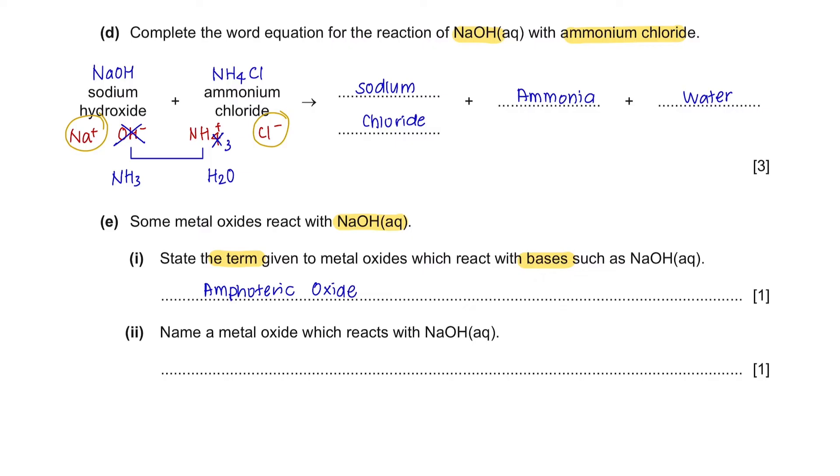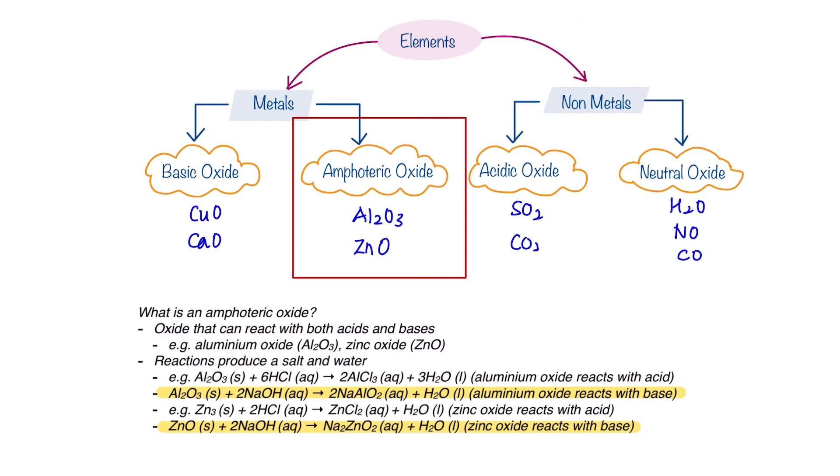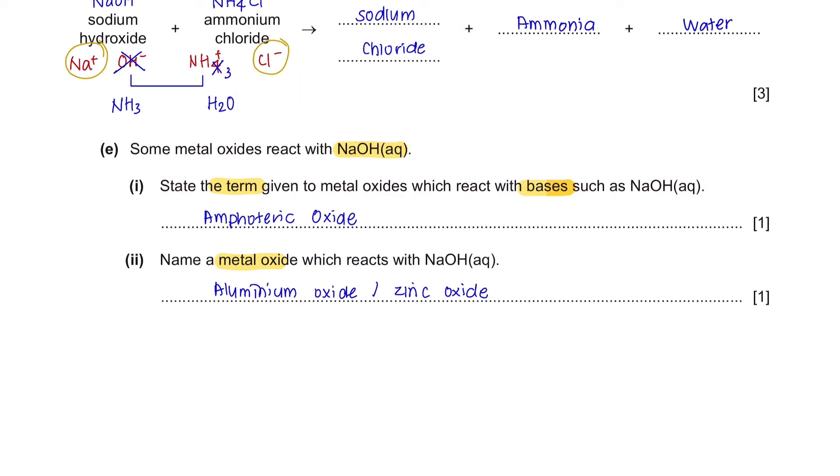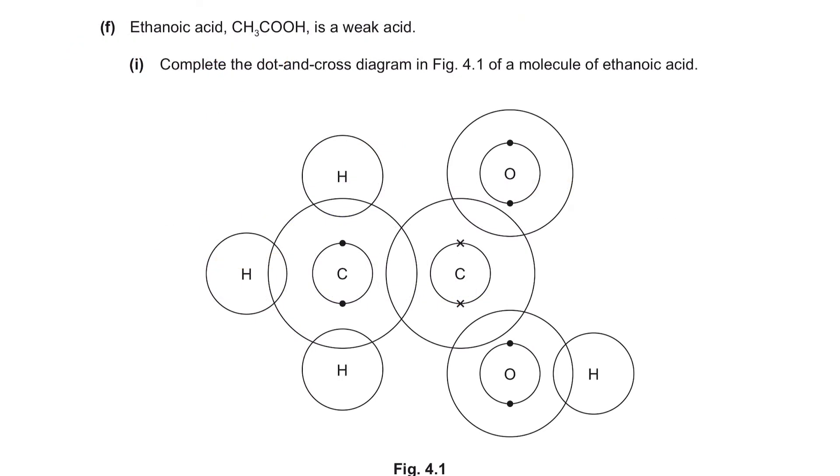Part 2: Name a metal oxide which reacts with sodium hydroxide. There are two common examples for amphoteric oxide which is aluminum oxide and zinc oxide. So you can say either one of these. Just an extra reminder, when they ask you to name something, make sure you name out the whole name of the compound or element instead of writing their chemical formula.